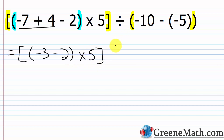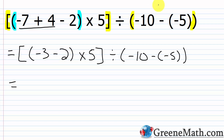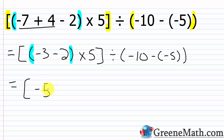Then times five, and we copy the rest. Continuing inside the parentheses, we now have negative three minus two. Negative three minus two is the same as negative three plus negative two. The sign stays negative, three plus two is five, so this is negative five. So we have negative five, then times five.